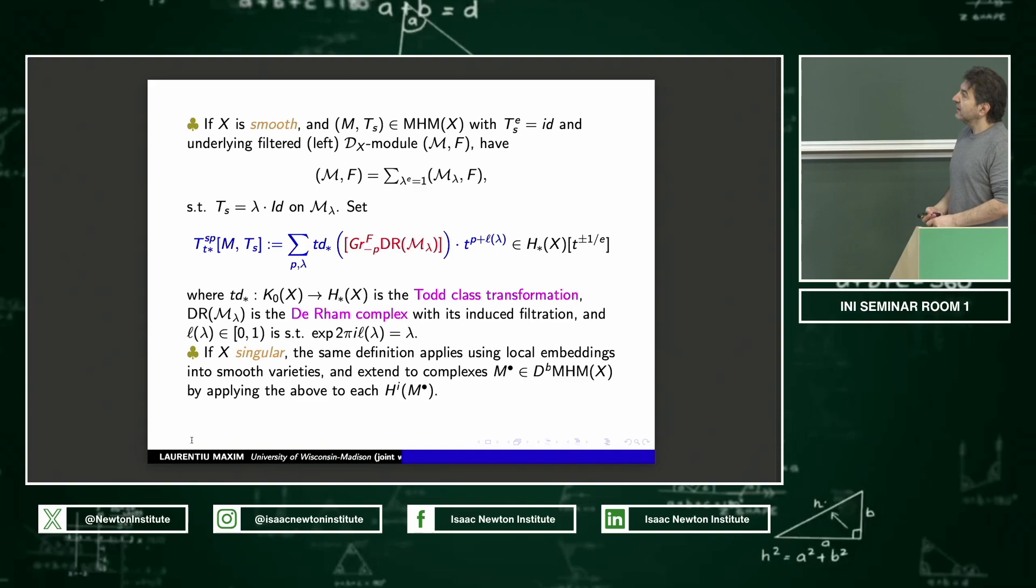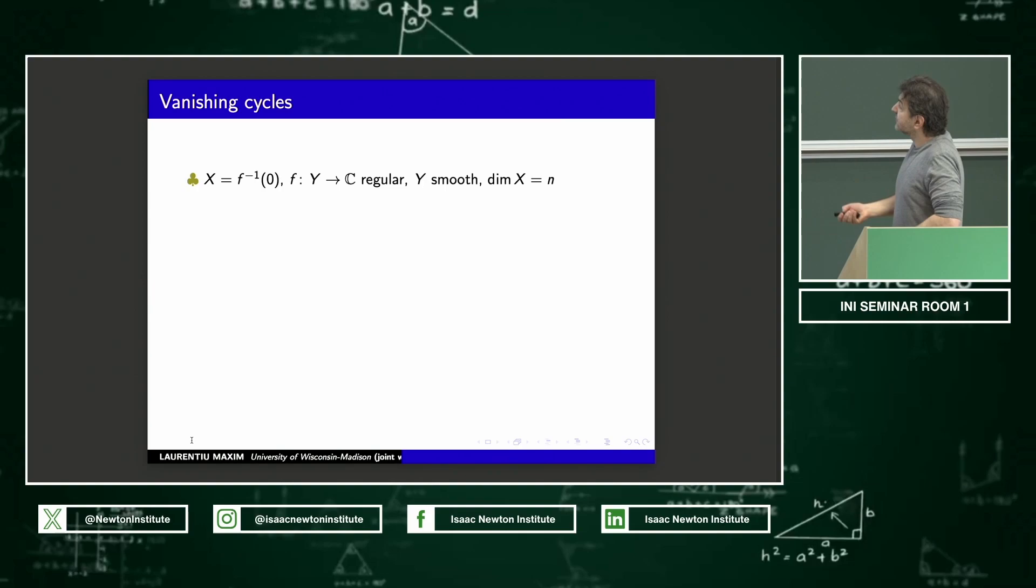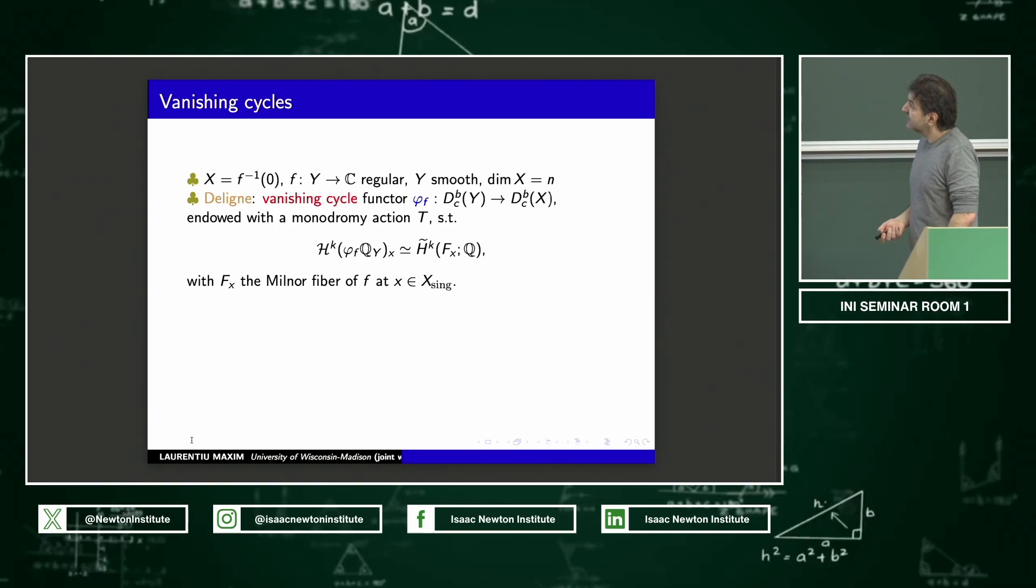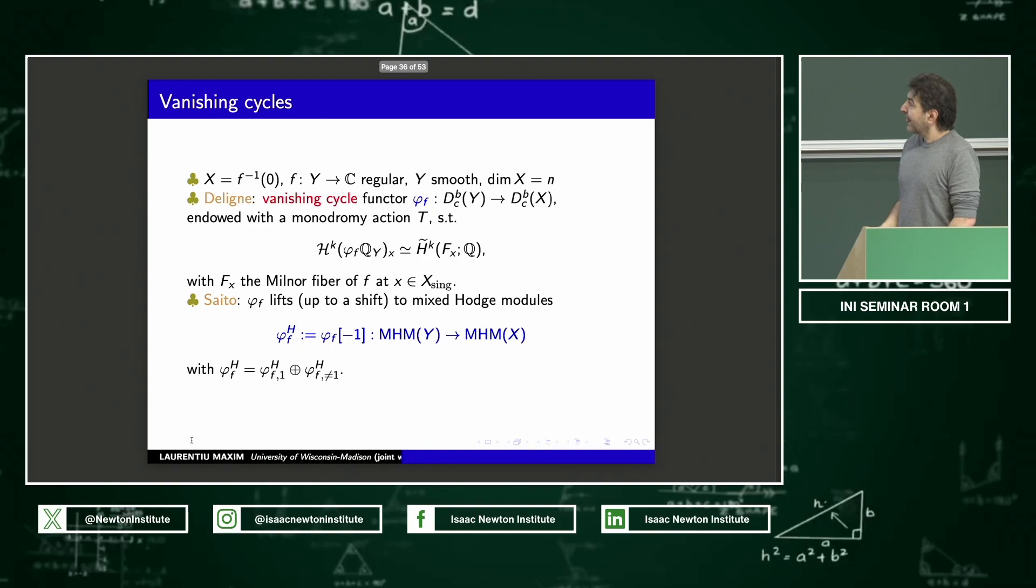The residue means exponential of 2πi times the residue is lambda. Again, whatever this is, if you work over a point space where mixed Hodge modules become mixed Hodge structures, you recover the definition of the Hodge spectrum. In the singular case, we do what Saito does. You work with local embeddings into smooth varieties. And then you can extend to complexes by simply applying this construction to each cohomology of the complex. Okay. So now I have two apparently unrelated, well, maybe I should, before I say that, let me just give you the very specific example I'm going to be interested in, vanishing cycles, of course. So I will have a globally defined hypersurface. I have a vanishing cycle complex defined by, well, locally this encodes the cohomology in the Milnor fiber or reduced cohomology in the Milnor fibers.